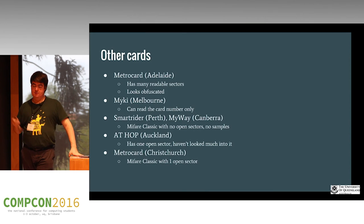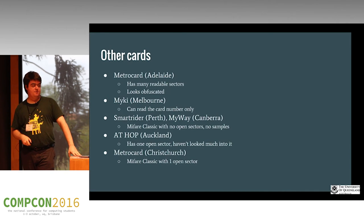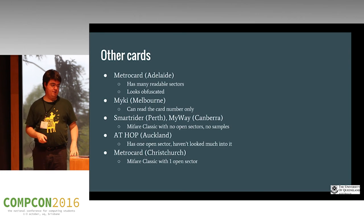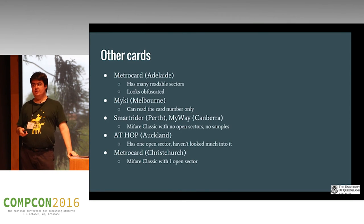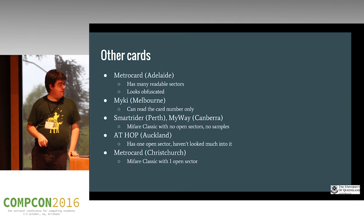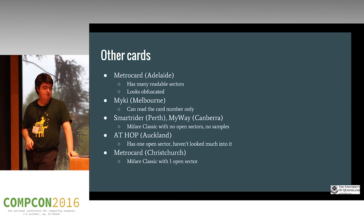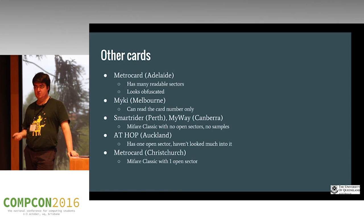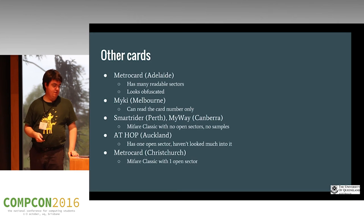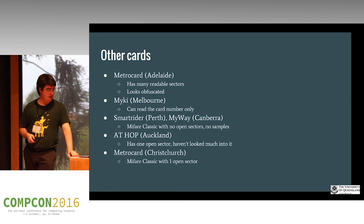I'm still looking at other cards. The Adelaide MetroCard: I have a few samples and some logs, but everything looks obfuscated or encrypted — I can read the card number but nothing else. Applications on the Play Store that claim to read it just scrape the website, which I don't like. The SmartRider in Perth and MyWay in Canberra are supposedly made by the same company — MIFARE Classic, no open sectors, and I have no samples. The AT HOP card in Auckland has an open sector but I'm not sure what's on it. The Christchurch MetroCard has a MIFARE Classic with one open sector — I have one card but not enough information because I never used it.